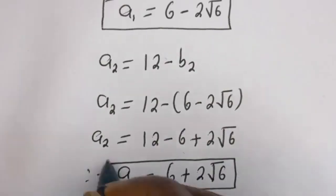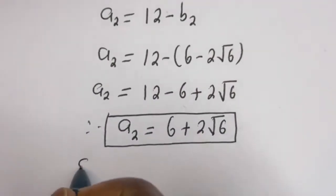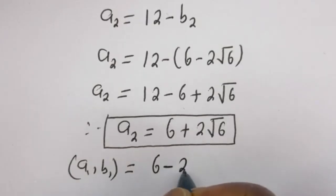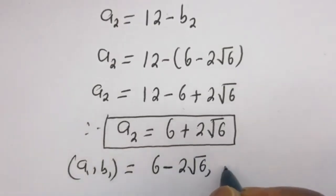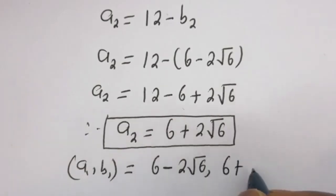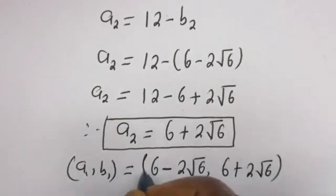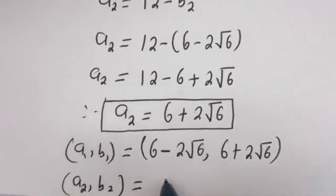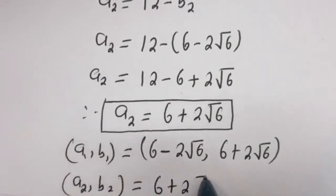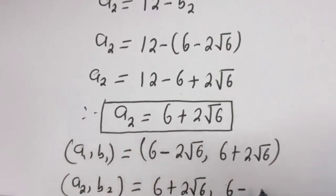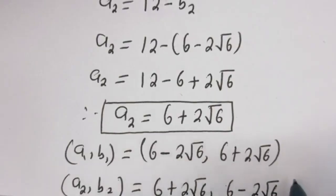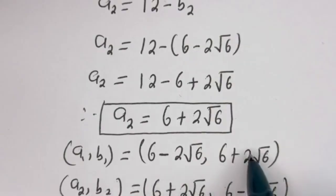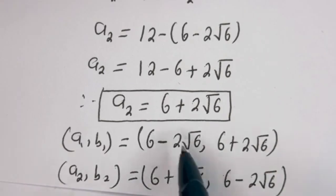This is the value of a2. Therefore our final answers are: a1, b1 equals (6 minus 2 root 6, 6 plus 2 root 6), and a2, b2 equals (6 plus 2 root 6, 6 minus 2 root 6). We can see that a1 equals b2 and a2 equals b1. So this is the final answer.